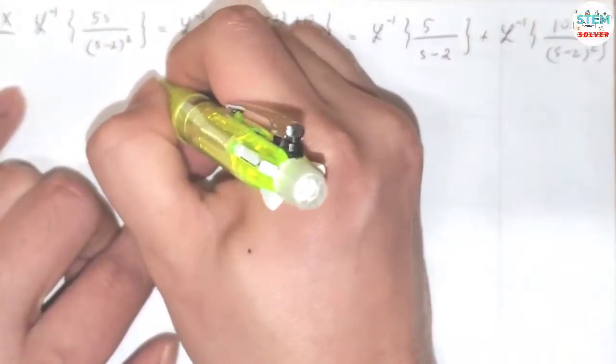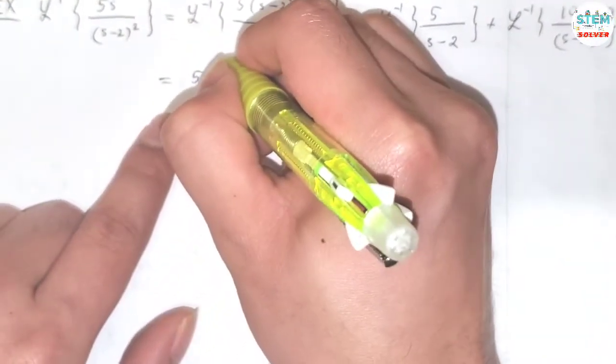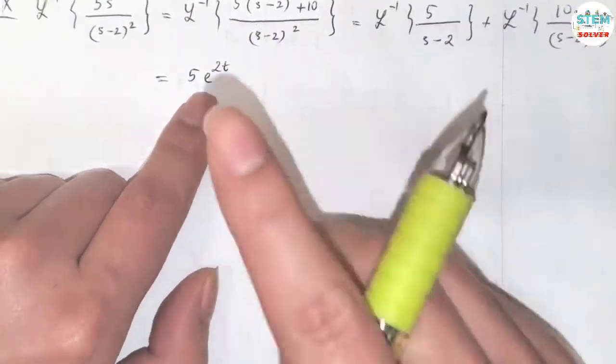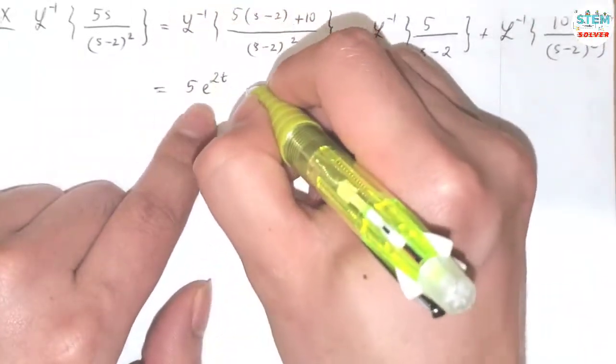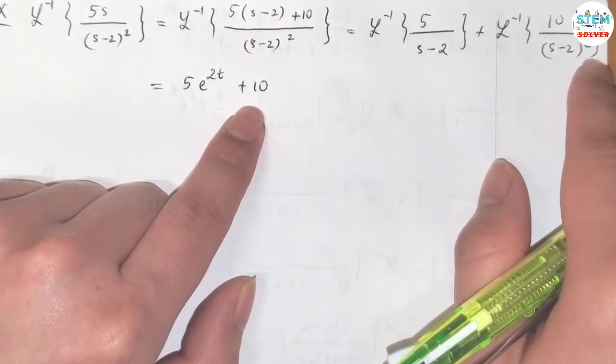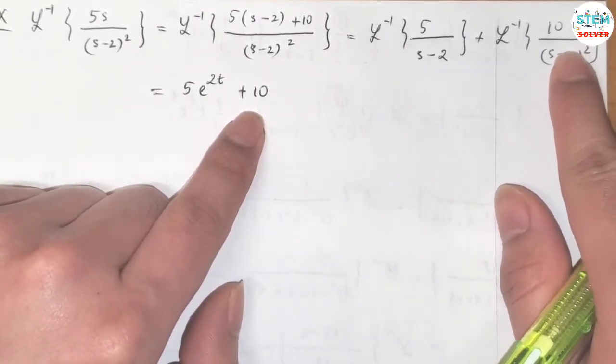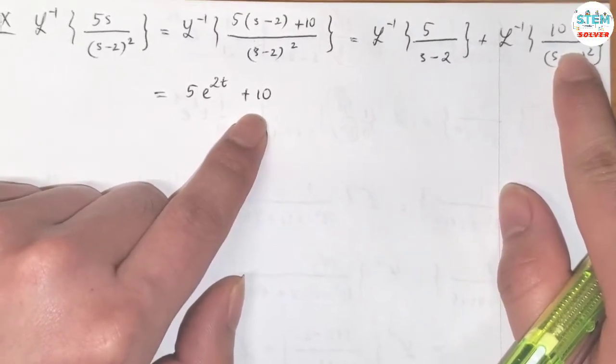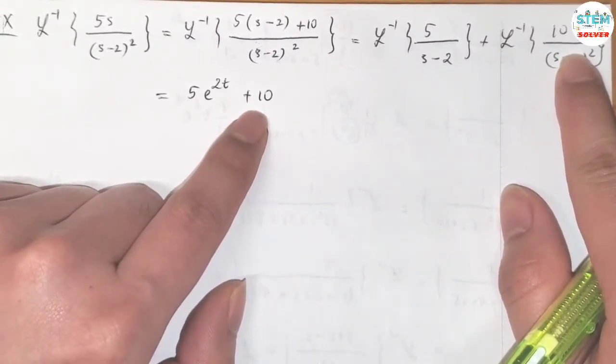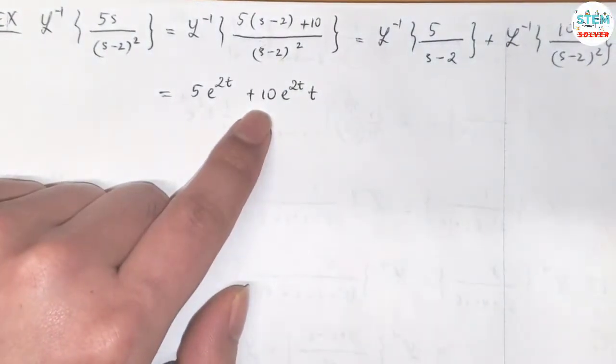Now the L inverse of this is going to be 5 times e to the 2t. What about this one? Let me factor out 10 first. And then the L inverse of this, 1 over (s-2) squared, so it's not a minus 2 here. So what does it look like? It looks like 1 over (s-1) and L inverse of 1 over (s-1) is just t, right? But since we have a shift here, so we need to have e to the 2t times t.